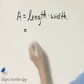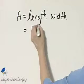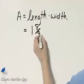So what is the length of this rectangle? It's given to be 1 and 8 ninths miles. I'll simply write down 1 and 8 ninths.